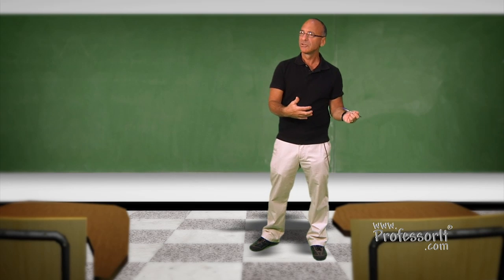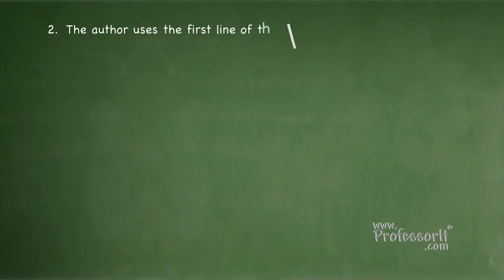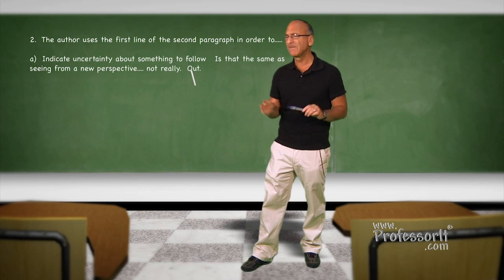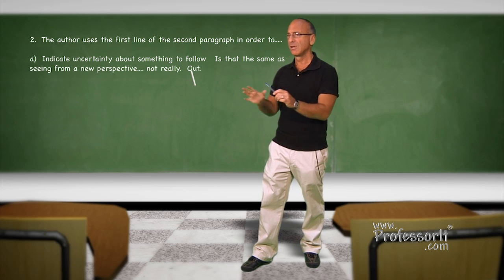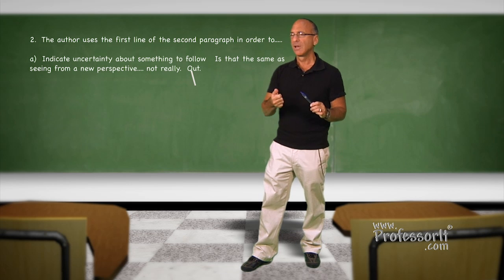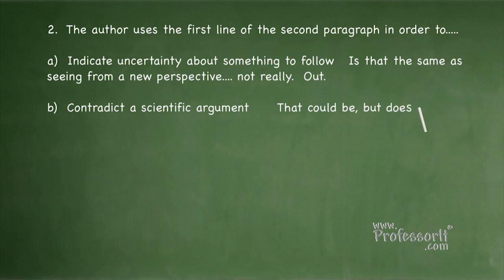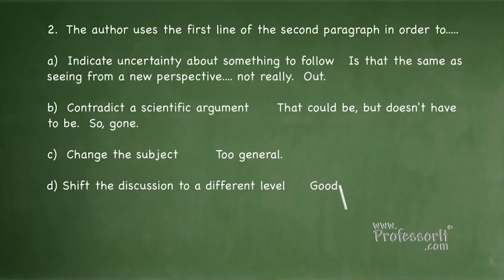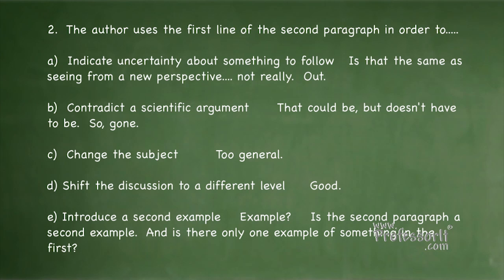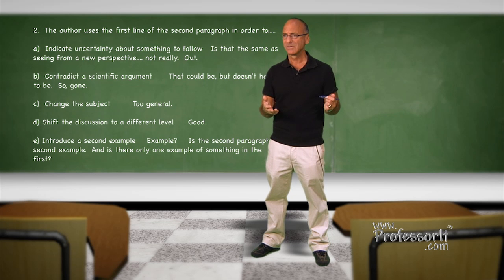Let's match this, our prediction, to the answers that we're given. The author uses the first line of the second paragraph in order to A, indicate uncertainty about something to follow. Is that the same as seeing from a new perspective? Remember, that's our predicted answer. Not really. So, it's out. How about B, contradict a scientific argument. That could be, but it doesn't have to be, so let's take it off the list. C, changing the subject. Change the subject. Too general. D, shift the discussion to a different level. Ah, that's good. We'll keep it on for now. E, introduce a second example. Example. Is the second paragraph a second example? And is there only one example of something in the first? You see my point.